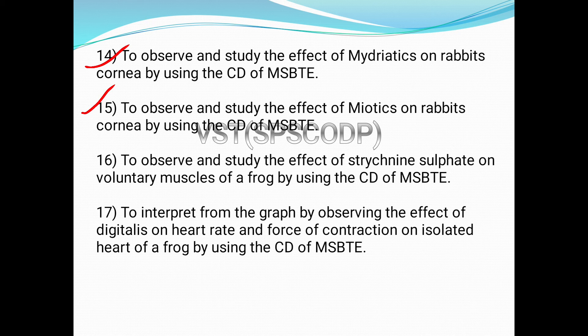Another experiment is to observe and study the effect of miotics on the rabbit's cornea. You have to understand the process of miotics, spasm of accommodation, and interpretation of results from observation using the CD of MSBT. Additionally, the effect of strychnine sulfate on voluntary muscle of a frog is studied using the CD of MSBT, including the concept of reflex action and mechanism of action of strychnine.